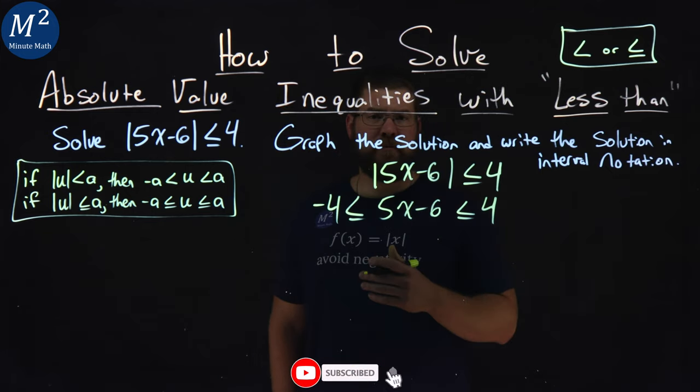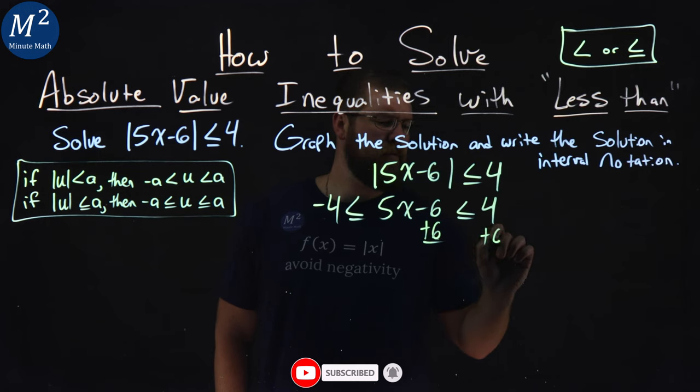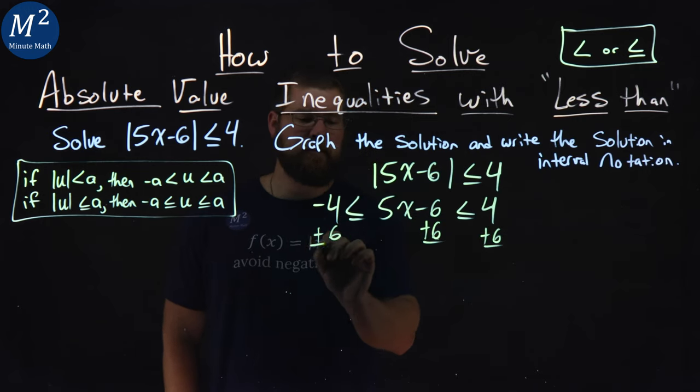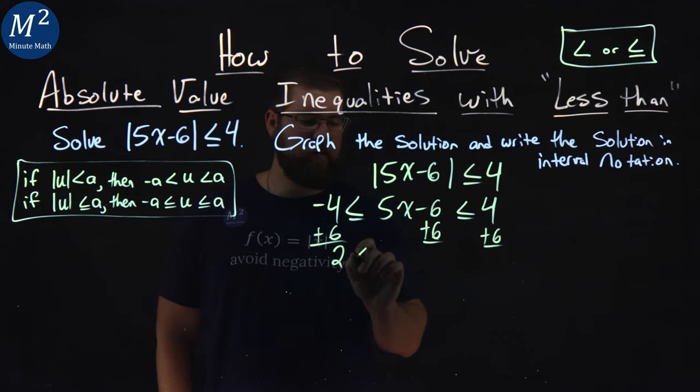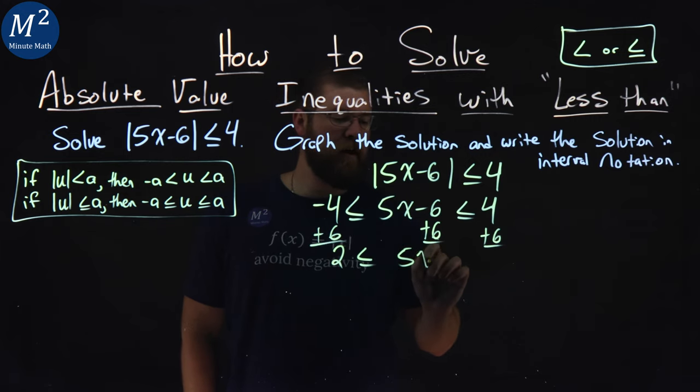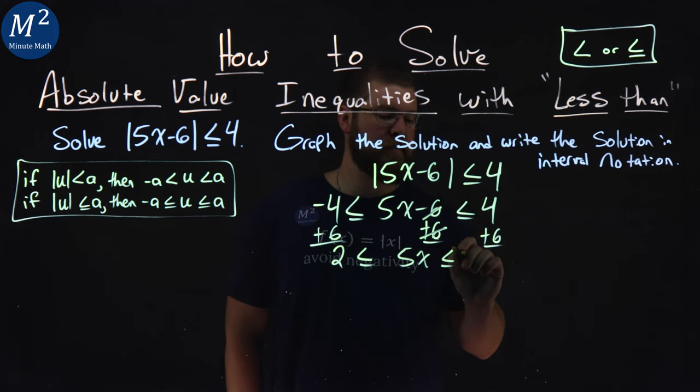Now from here, we want to solve this inequality. I'm going to add 6 to all three parts here. Negative 4 plus 6 is positive 2, which is less than or equal to—what's left is 5x. These 6s cancel, which is less than or equal to 4 plus 6, which is 10.